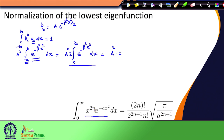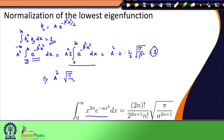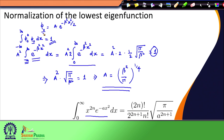Applying the Gaussian integral formula, the result gives A² × (π/β²)^{1/2} = 1, so A² √(π/β²) = 1, and therefore A = (β²/π)^{1/4}. This is the normalization constant. The final normalized form of the lowest eigenfunction of the harmonic oscillator is φ₀ = (β²/π)^{1/4} e^{−β²x²/2}.